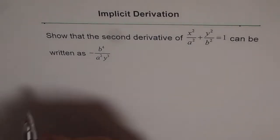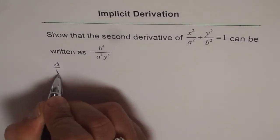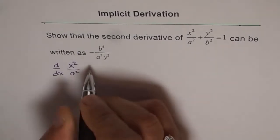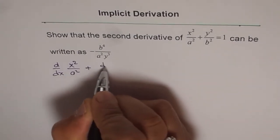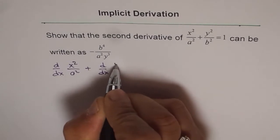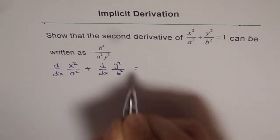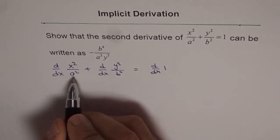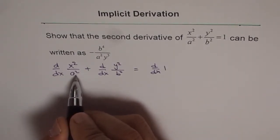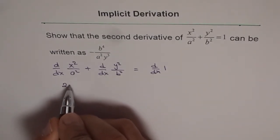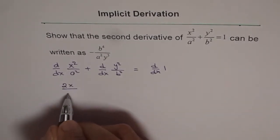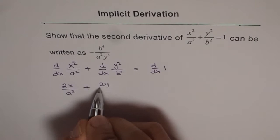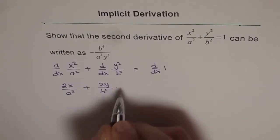When we do the derivative with respect to x, we get d/dx of x squared over a squared plus d/dx of y squared over b squared equals d/dx of 1. Since a squared is a constant, the derivative of the first term is 2x over a squared. Plus, the derivative of the second term will be 2y over b squared times dy/dx.